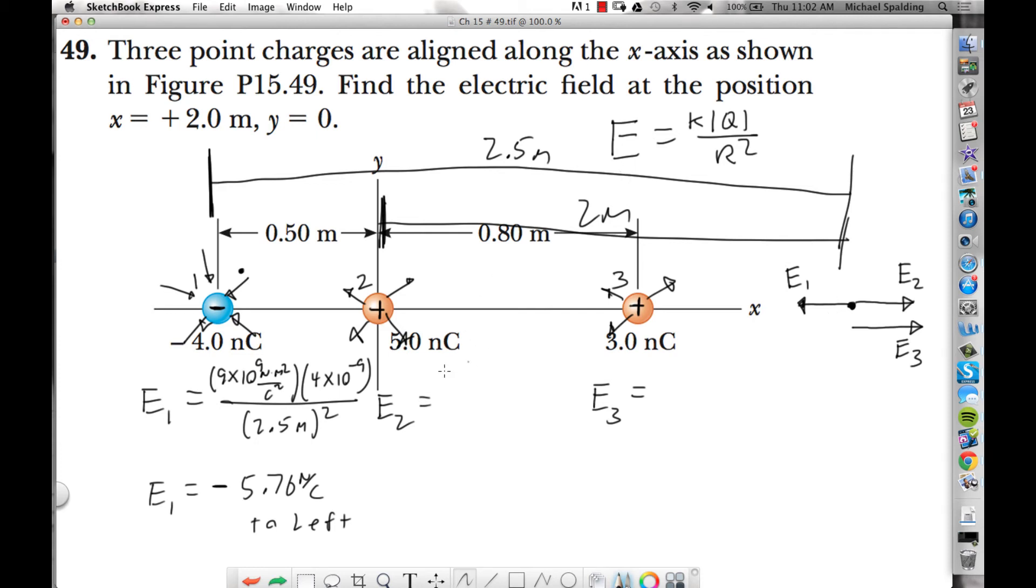E2, plugging into this equation again. KQ over R squared. So 9 times 10 to the 9th newton meter squared over Coulomb squared. So now we have 5 nanocoulombs, 5 times 10 to the negative 9. What's the distance for charge 2? That's 2 meters, right? So E2 comes out as 11.25 newtons per Coulomb to the right.